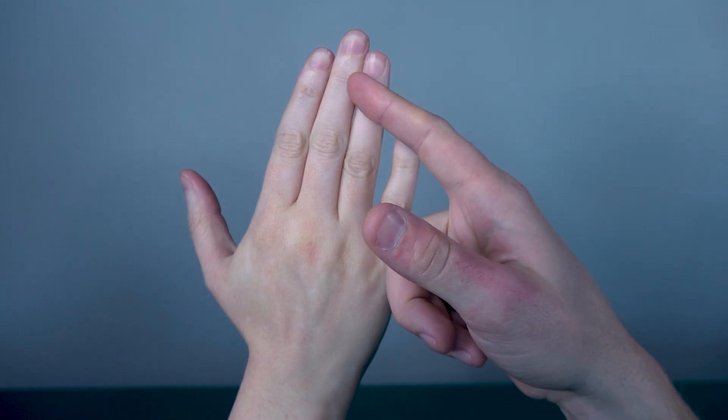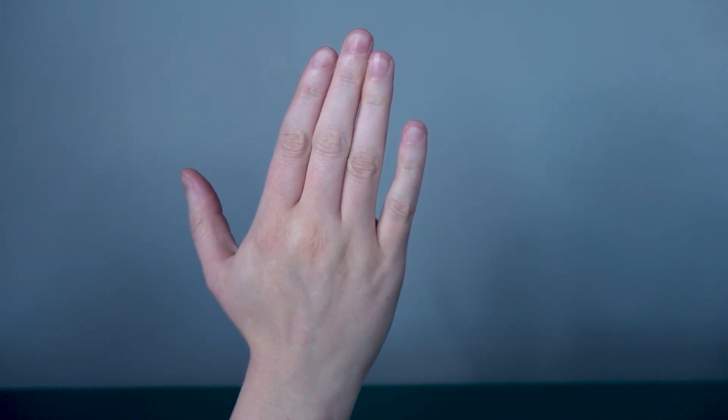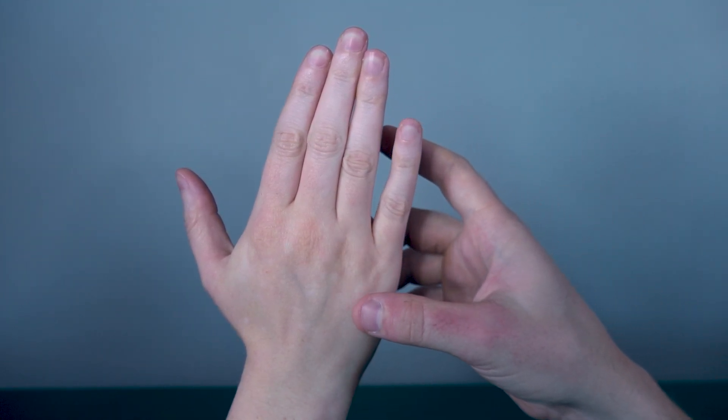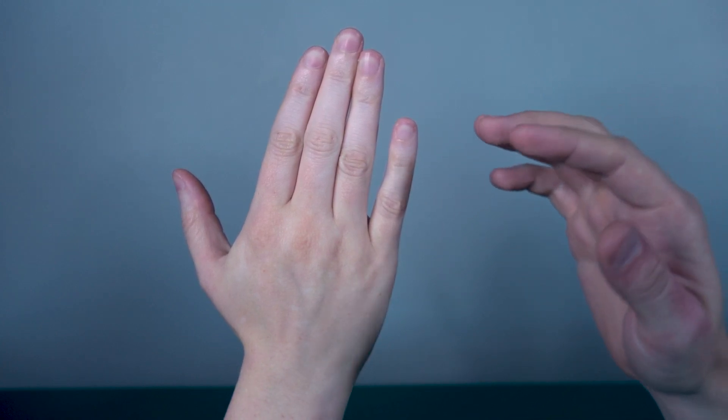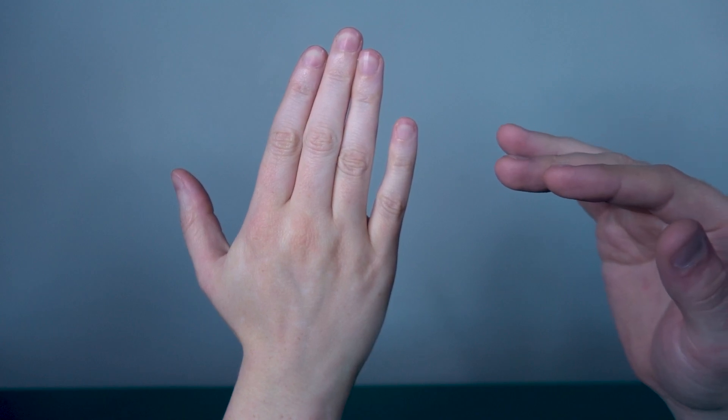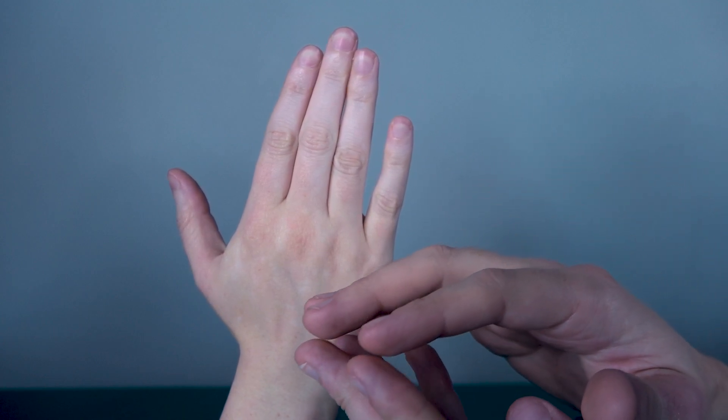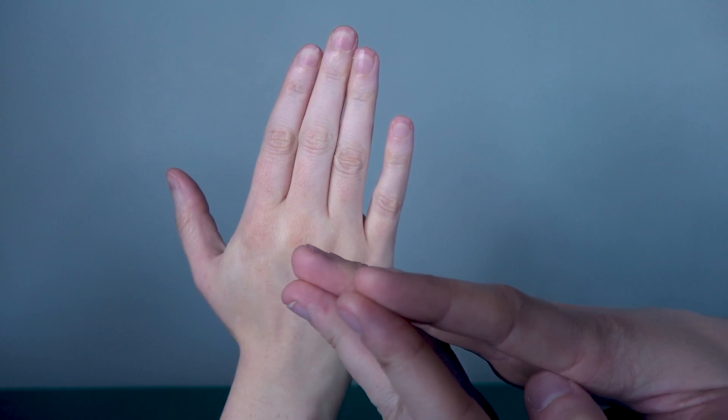When measuring PIP and DIP extension, the patient will be in a seated or comfortable position. The hand can be resting on its side on the table or up in any position you want. Whatever position you have the patient in, make sure that the fingers are not resting against an object to promote more extension than they actually have.